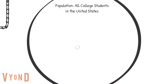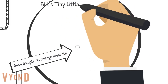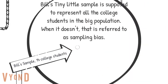The study sample is supposed to represent a larger population of people. So in Bill's study, the sample of college students may represent the entire population of college students in the United States. Bill's sample of 14 college students is supposed to represent the millions of college students in the United States. When Bill's sample does not represent that population very well, this would be called sampling bias.